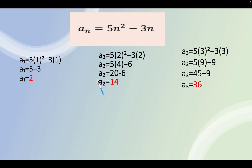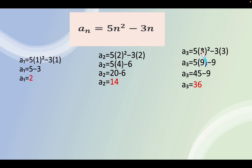For the third term, a sub 3 equals 5 times 3 squared minus 3 times 3. Since 3 squared is 9, we get 5 times 9 which is 45, minus 9. So the answer for the third term is 36.